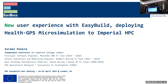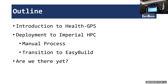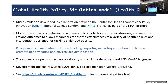I'm going to go through my experience of using EasyBuild for the first time to get something actually deployed to an HPC here at Imperial. The outline of my talk is an introduction to what Health GPS is, then two parallel tracks: doing the process by hand, which is usually how you start, and then my transition to EasyBuild and how that's gone. The final part is: have we actually accomplished that transition — are we done?